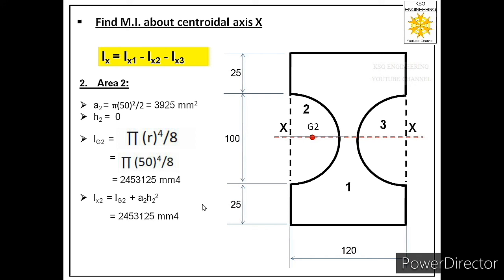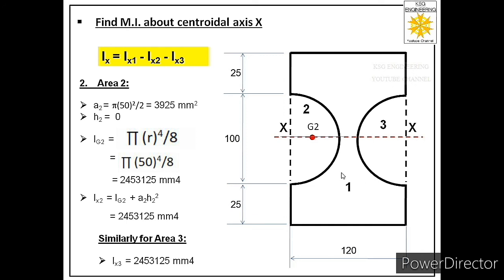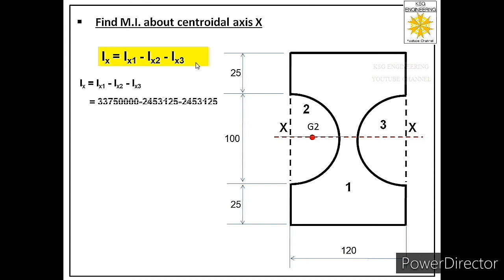One important observation: area 3, the semicircular area on the right, is exactly similar to area 2 in size and shape and is opposite to it. Therefore, Ix3 = Ix2. Similarly for area 3 we can calculate Ix3 — it will be exactly the same. Now we have all three values, and the final step is simply to substitute them into Ix = Ix1 - Ix2 - Ix3 to get our answer. I hope the procedure for solving this numerical is clear to you. Thank you very much.